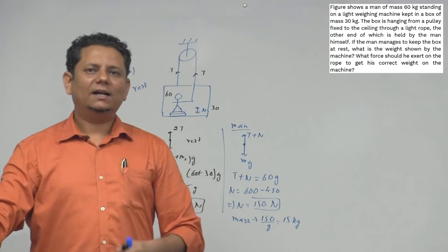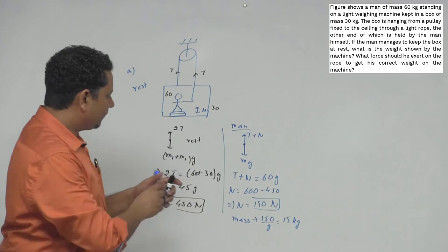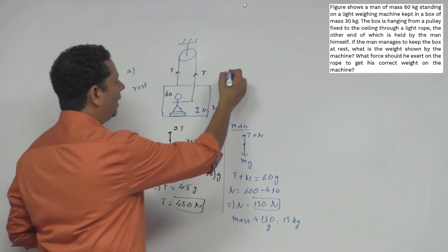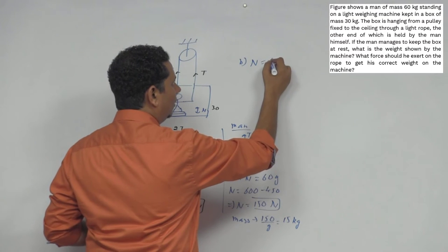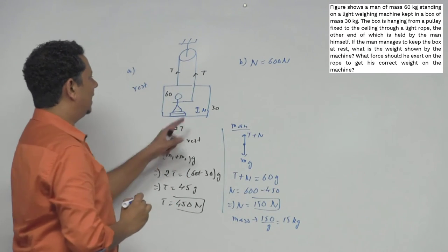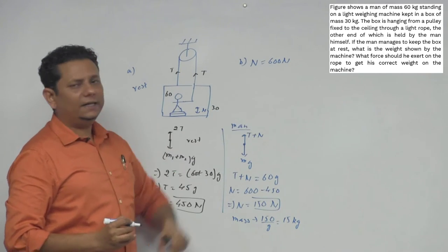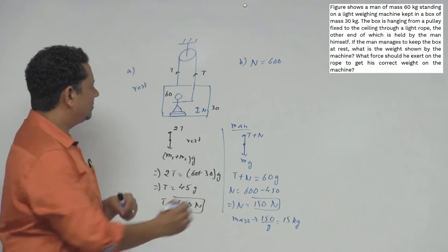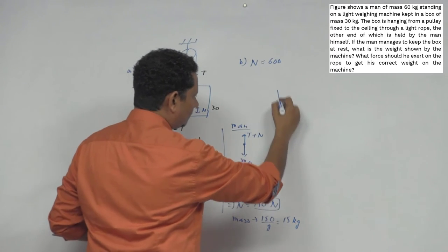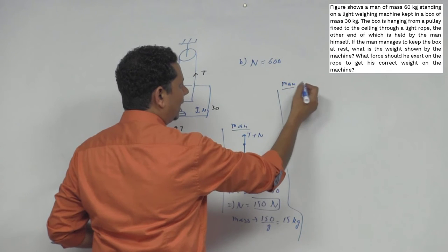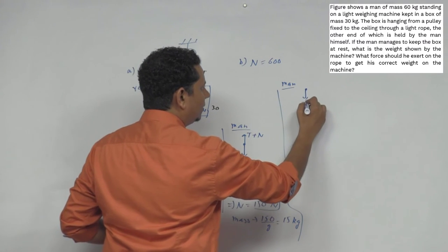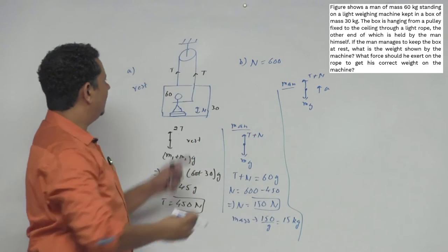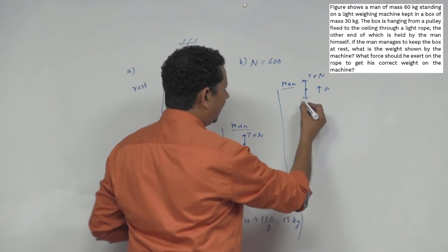The second part asks: how much force is needed so that the reading is correct? In part B, the normal should be 600 Newtons. If the man applies force such that there's acceleration, then using the man's FBD: tension plus normal minus 60g should equal 60a.